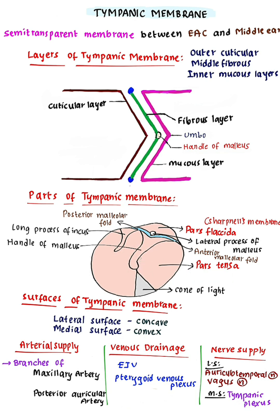The handle of malleus is attached to the inner surface of pars tensa. Pars flaccida is a small triangular area present above the lateral process of malleus, between the anterior and posterior malleolar folds.